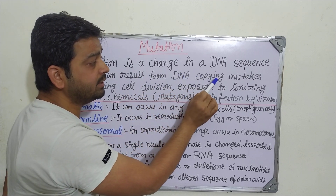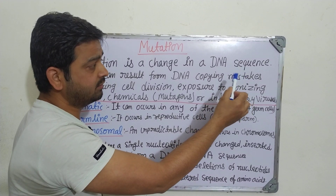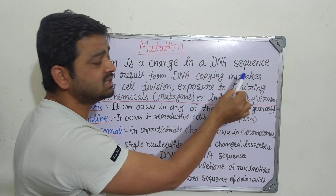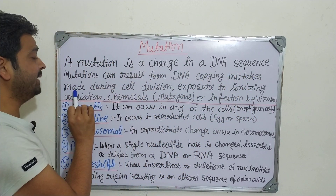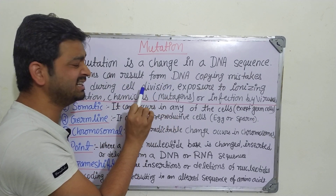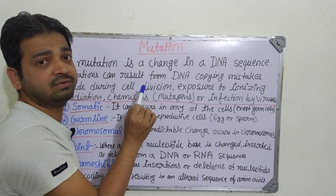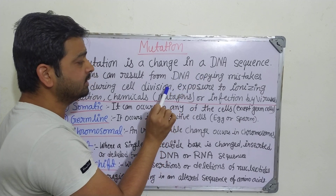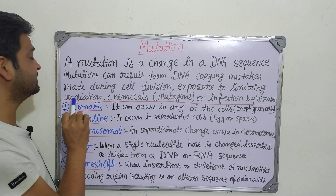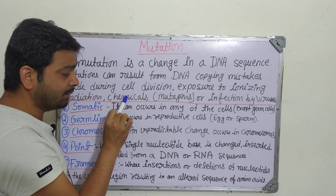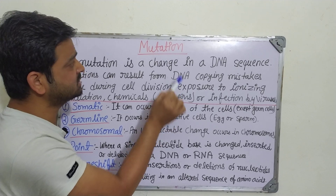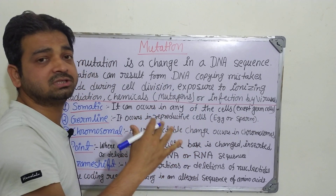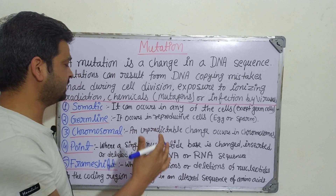Mutations can result from DNA copying mistakes. Whenever DNA replication is going to take place in an organism, copying mistakes made during cell division — like mitosis or meiosis — if any mistake occurs in the DNA copying, it may be because of exposure to ionizing radiation, exposure to chemicals — these are called mutagens. Infection by a virus, or whatever kind of disturbance in the DNA sequence, that is also called a mutation.